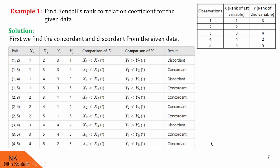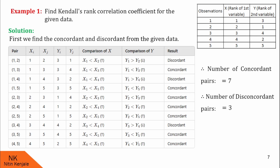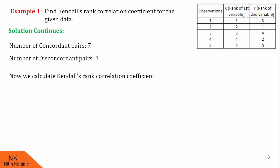Now finally, we will count the number of concordant and discordant pairs from this table. The number of concordant pairs is 7 and the number of discordant pairs is 3. Using these values of C and D, we will calculate tau. The formula for tau is (C minus D) upon n(n minus 1)/2. Substituting values for C, D, and n, I see the value of tau is 4 upon 10, that is 0.4. So the corresponding Kendall's rank correlation coefficient is 0.4.